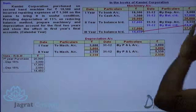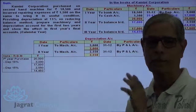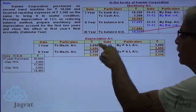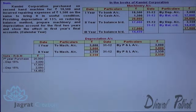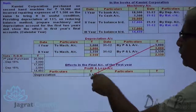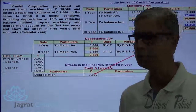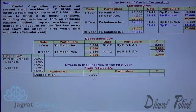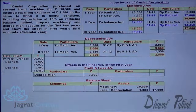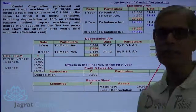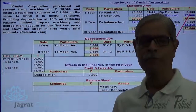I am also required to demonstrate the effect of this depreciation on the final accounts, which consist of the profit and loss account and the balance sheet. In the first year, depreciation of $3,000 is debited to the profit and loss account. In the balance sheet, machinery cost of $20,000 less first year's depreciation of $3,000 gives a written-down value of $17,000, which is recorded in the outer column. This is how the depreciation adjustment is reported in the profit and loss account and balance sheet.